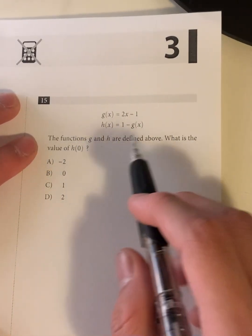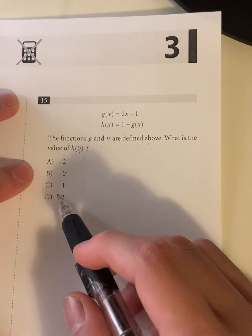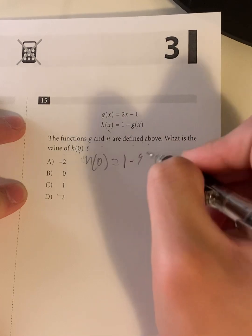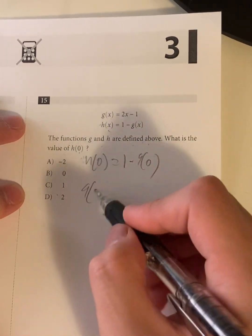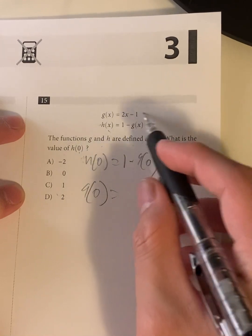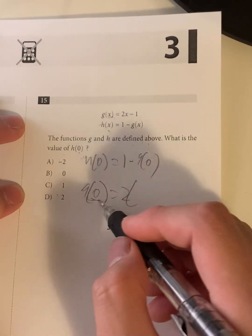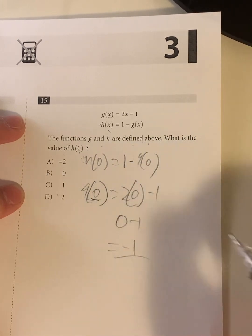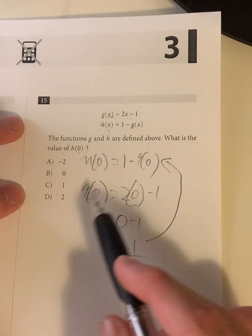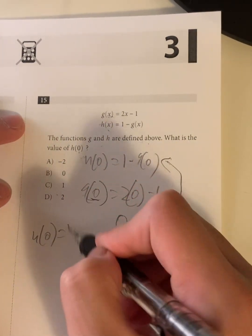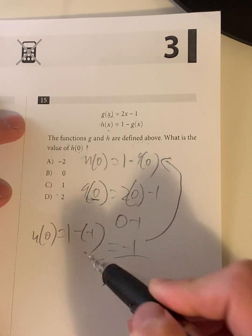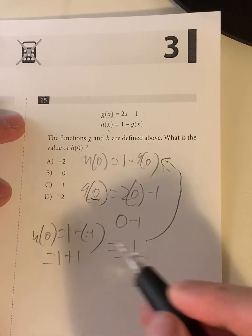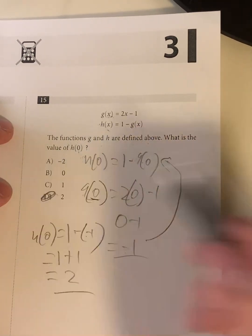Question 15. The function g and h are defined. What is the value of h of 0? So h of 0 is equal to 1 minus g of 0. So what's the value of g of 0? g of 0 is equal to 2x minus 1. So it's 2 times the x value, which is 0 in this case, minus 1. 2 times 0 is 0. 0 minus 1 is negative 1. So let's plug this back into this equation, because we just found the value of g of 0. So h of 0 is equal to 1 minus negative 1. Because that's the g of 0 value. So that's equal to 1 minus minus is positive, plus 1. That's going to be 2. Meaning the answer has to be D.